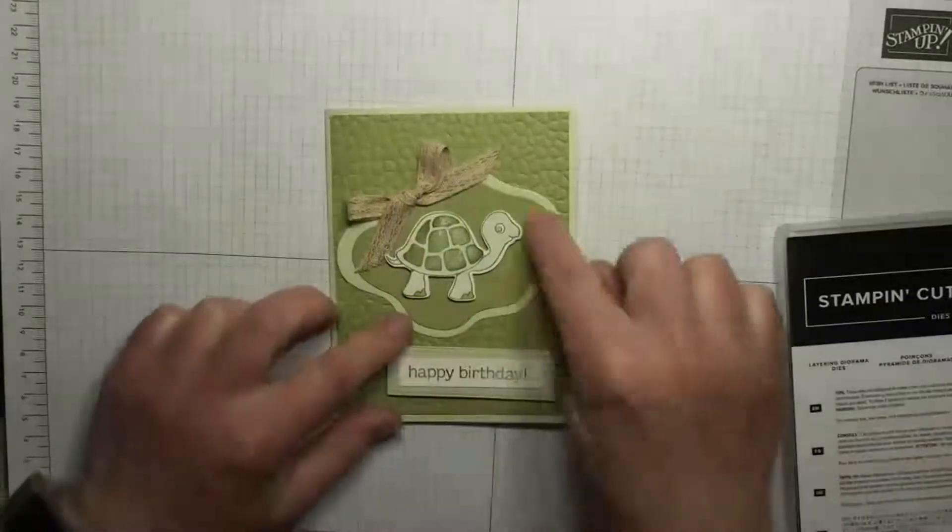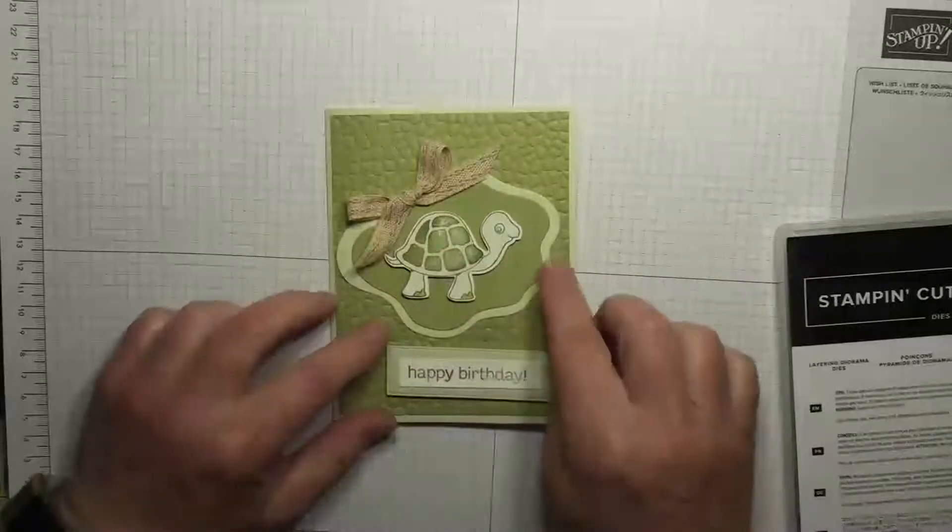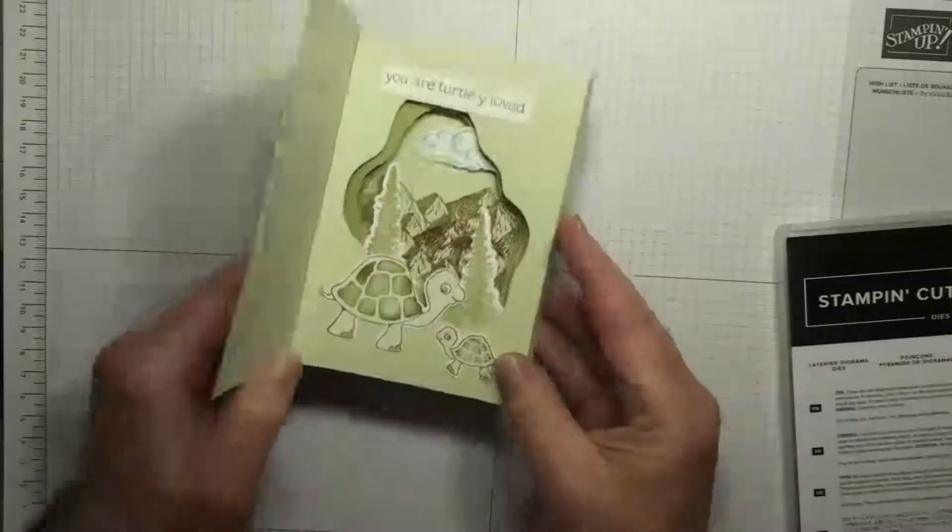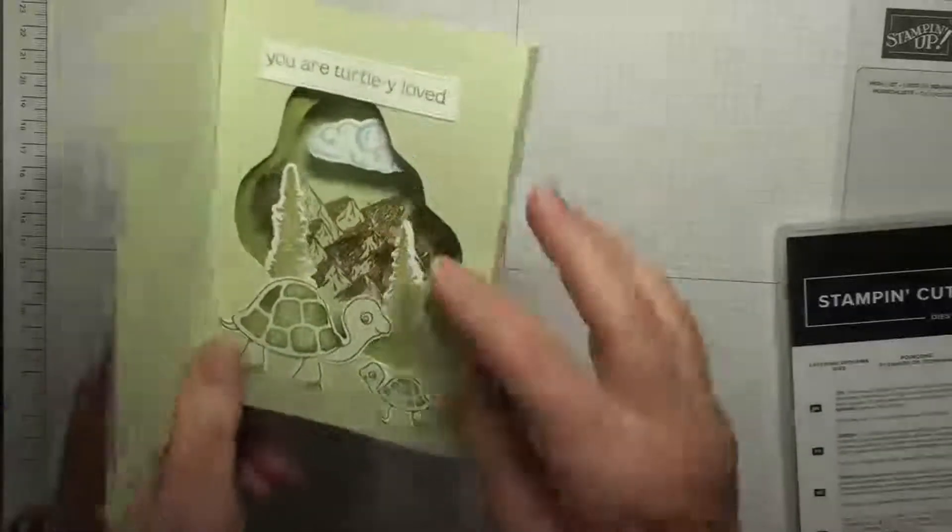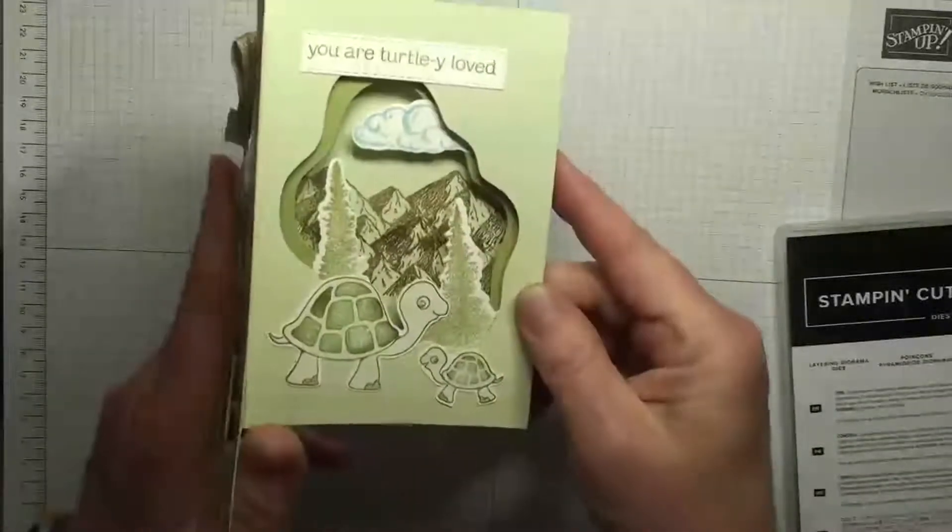Let me show you the card I made. So the this part on the front is the cutout of the layering diorama, and then when you open it you have the diorama on the inside. These are the cutouts. Isn't that fun?